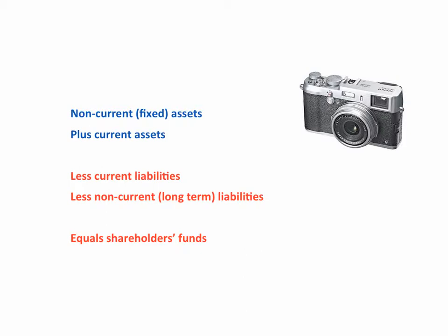Current liabilities are amounts that the company owes and has to pay within 12 months from the balance sheet date, whereas non-current liabilities are amounts that the company owes and has to repay in more than 12 months. Deducting the liabilities from the assets gives the net assets — that is the assets net of, or less, the liabilities.